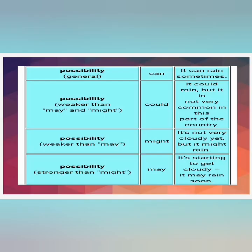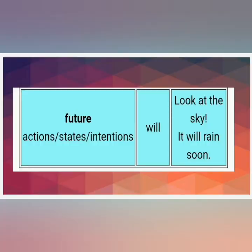For possibility in general, we can use can — 'It can rain sometimes.' When possibility is weaker, use could — 'It could rain.' When possibility is weaker than may, use might. When the possibility is expressed with may, use may. So according to strength of possibility, use can, could, might, or may. To represent future action, state, or intention, use will — 'Look at the sky, it will rain soon.'